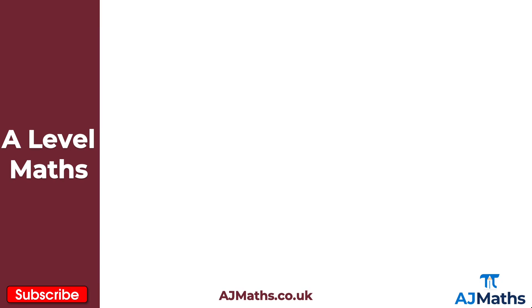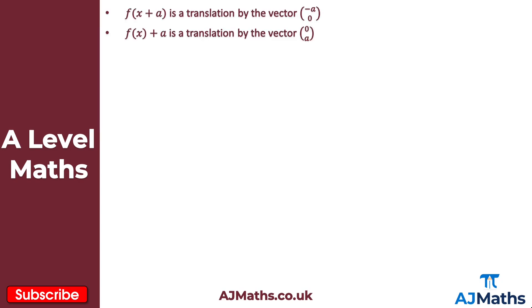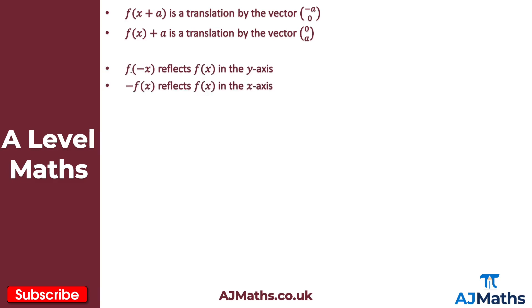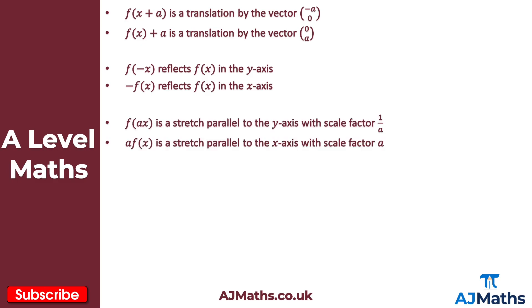In this video I want to take a look at combining transformations. To begin, let's recap the transformations you should be familiar with. We have two translations: a horizontal translation by the vector (-a, 0) and a vertical translation by the vector (0, a). Then two reflections: f(-x) reflects f(x) in the y-axis, and -f(x) reflects f(x) in the x-axis. Finally, two stretches: f(ax) is a stretch parallel to the y-axis with scale factor 1/a, and a·f(x) is a stretch parallel to the x-axis with scale factor a.